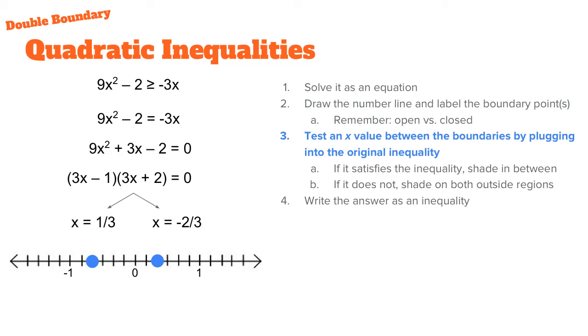Our next step is to test an x value which is between these boundaries. That's the easiest way to do it - take any point in between these boundaries and test it in the original inequality. Zero happens to be the easiest point that you can choose. You don't have to use zero, but it's definitely the most simple one to choose as far as plugging something in.